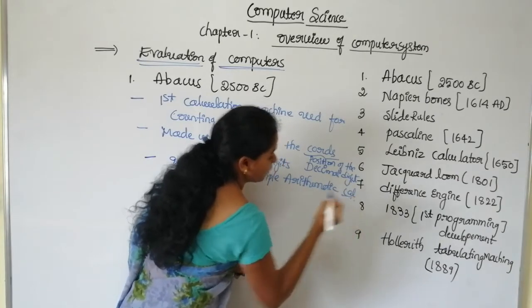The third tool is the Slide Rule. It was developed by William Oughtred. This slide rule is based on the principle that the actual distances from the starting point of the rule are directly proportional to the logarithm of the numbers printed on the rule.